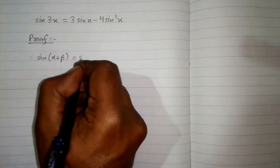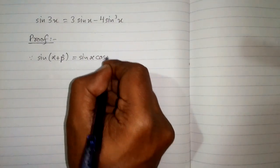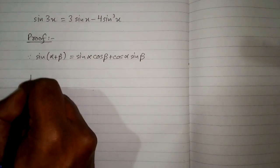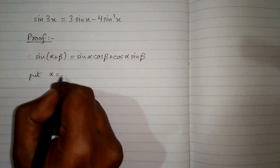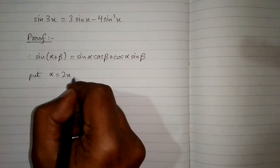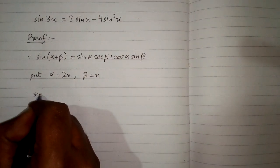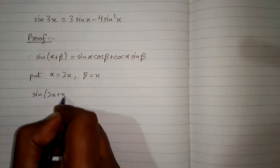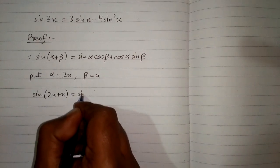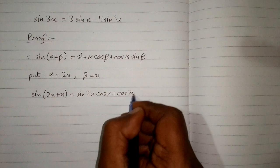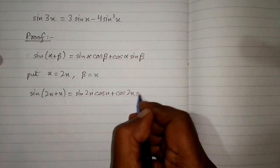Since sine of alpha plus beta is equal to sine alpha cos beta plus cos alpha sine beta, we can put 2x in place of alpha and x in place of beta. So we have sine of 2x plus x is equal to sine 2x cos x plus cos 2x sine x.